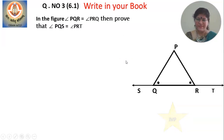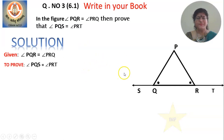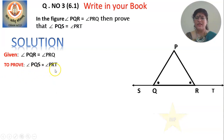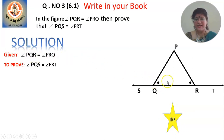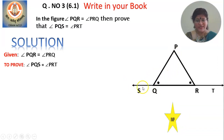It is given that angle PQR equals angle PRQ. You need to prove that angle PQS equals angle PRT. The clue is: consider the relation between the given angles and the exterior angle. Angle PQS is outside the triangle, so it becomes the exterior angle. Now, the first step is to use angles in a linear pair.